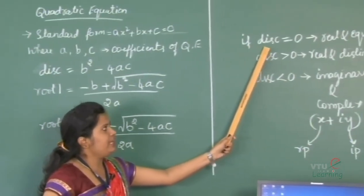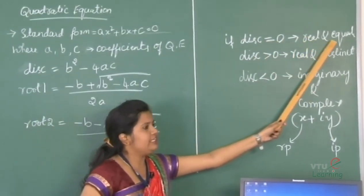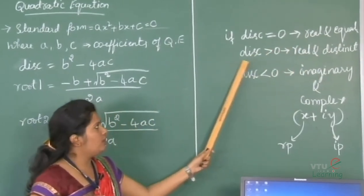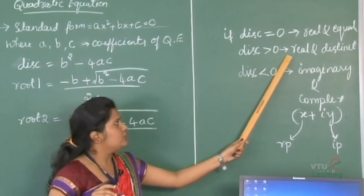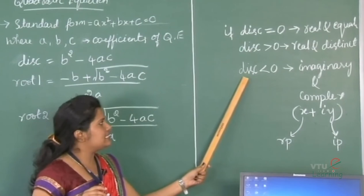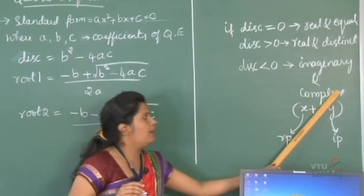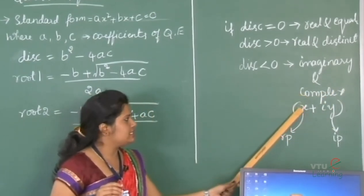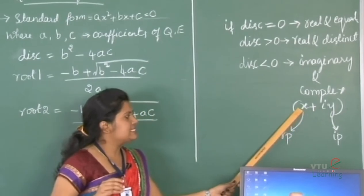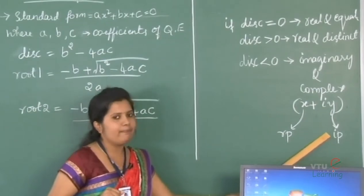If the discriminant value is equal to 0, then the roots are real and equal. If the discriminant value is greater than 0, then the roots are real and distinct. If the discriminant value is less than 0, then the roots are imaginary and complex. The standard form of complex is x + iy, where x is the real part and y is the imaginary part. This program calculates all possible roots of a quadratic equation.